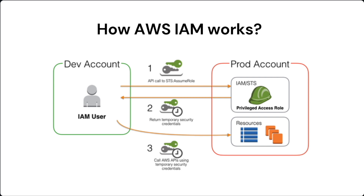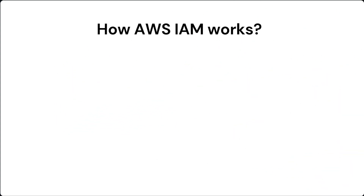The main work of IAM is to validate the access using policies. IAM generates a temporary security token if the requester has access to a particular service. The requester can access the service while the token is valid. The next question is: what is a user and group in AWS IAM?